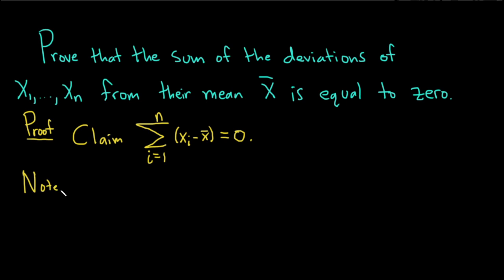we have the sum of the deviations going from 1 to n, x sub i minus x bar. And so now what we'll do is we'll use properties of sums. We can break this up into two distinct sums. So this is the sum as i goes from 1 to